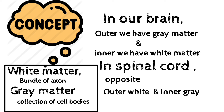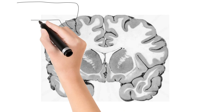It is easy to understand if we see it diagrammatically. In the diagram, the outer side of the cerebral shows grey matter, and the inner side of the cerebral has white matter.